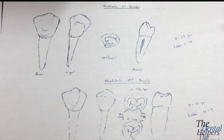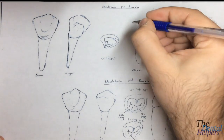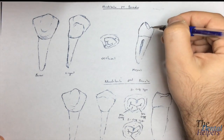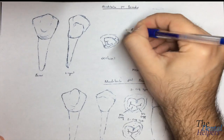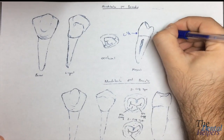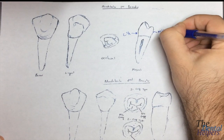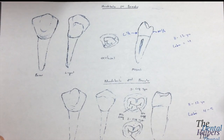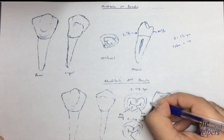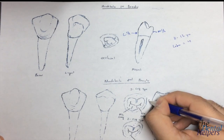Let's look at the height of contour. For the mandibular first, in the buccal, it's in the cervical third, and in the lingual, it's in the middle third. While in the mandibular second, the buccal is in the cervical-middle third.